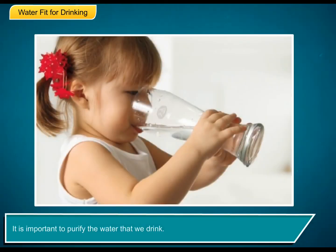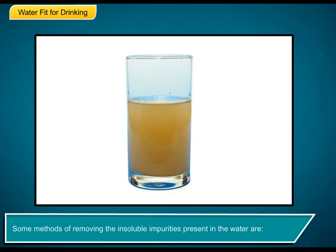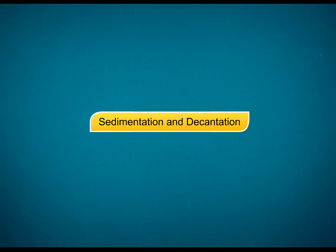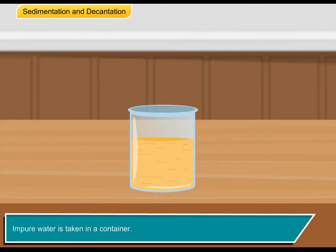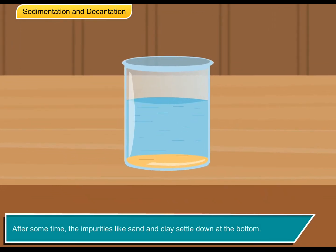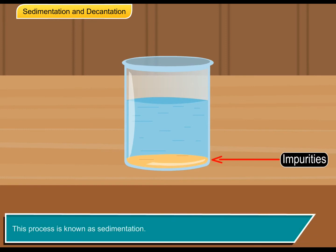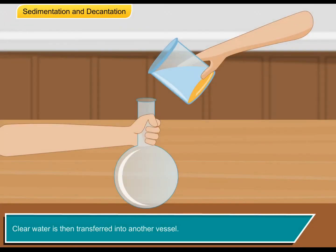It is important to purify the water that we drink. Some methods of removing the insoluble impurities present in the water are: Sedimentation and decantation. Impure water is taken in a container. After some time, the impurities like sand and clay settle down at the bottom. This process is known as sedimentation. Clear water is then transferred into another vessel.